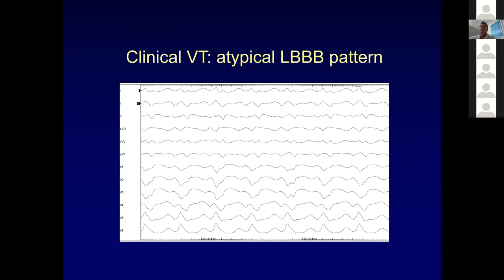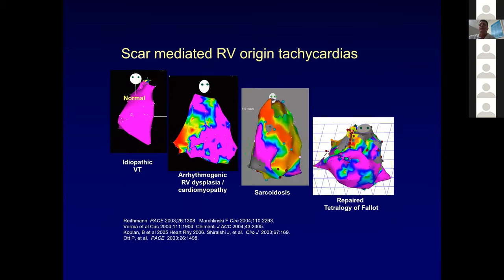We think slam dunk — we know the diagnosis on clinical grounds, that's what the task force criteria exists for. But you've got this funny VT, and I always worry about RV substrates. This was a point driven home by my mentors Dr. Tedrow and Dr. Stevenson, who published a paper showing scar-mediated RV origin tachycardias can look similar. With ARVD and sarcoid, there's a lot of scar and I can't always look at one and say that's ARVD versus sarcoid — it could be genetic, it could be inflammatory.